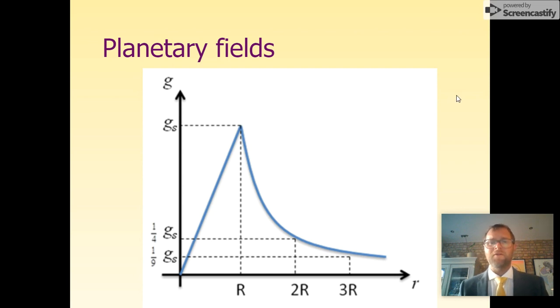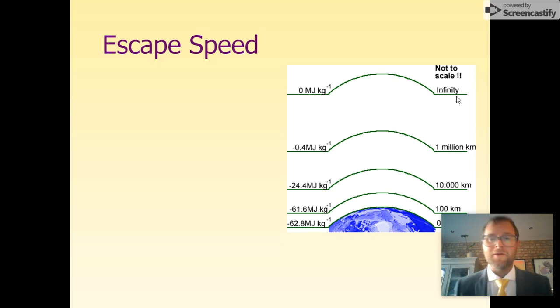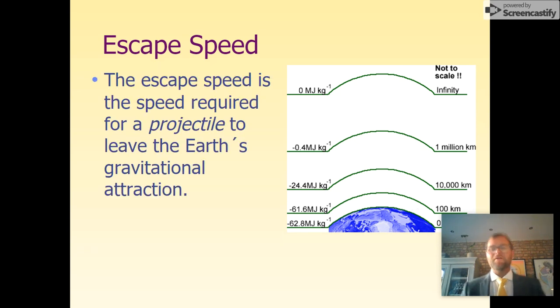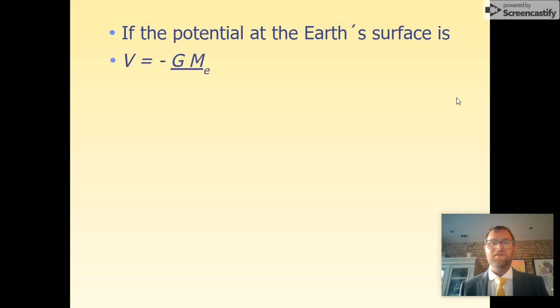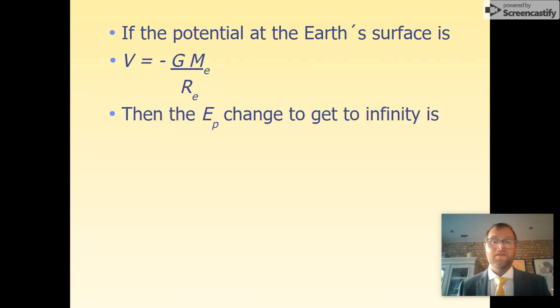Another thing we want to do is escape planet Earth. We're going to talk about escape speeds today, where we have to overcome the force of gravity. Escape speed is the speed required for any projectile to leave Earth's gravitational attraction—to get to infinity, where there'd be zero potential. If the potential at Earth's surface is V = -GM/R, then the change in energy as we get to infinity works like this.